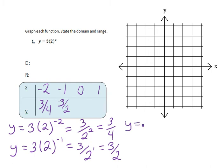Our next x coordinate, 0, gives us y equal to 3 times 2 raised to the 0 power. Anything raised to the 0 power is 1, so we have 3 times 1, or 3.